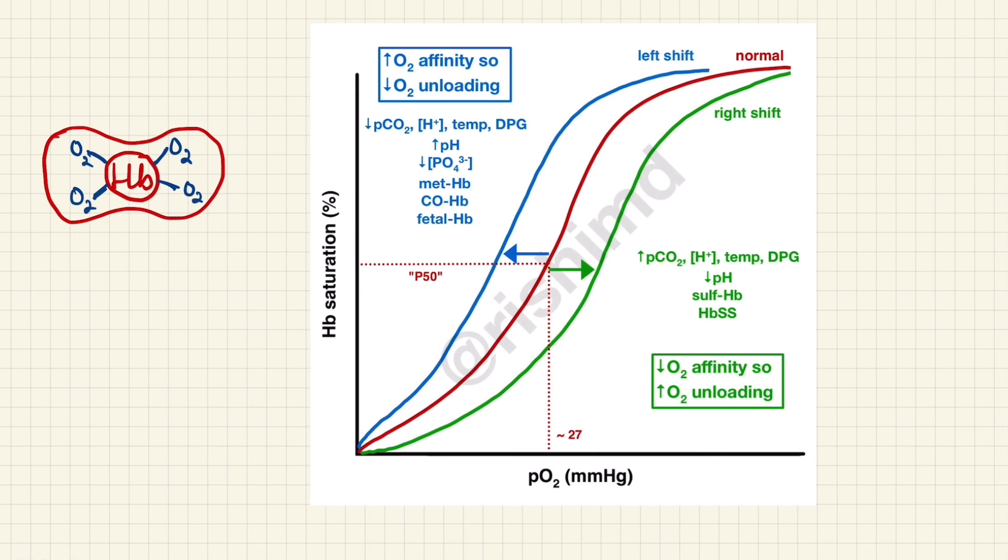If we talk about this line, the partial pressure is increasing, and the Hb saturation of oxygen is also increasing. The line comes out to be something like this, which is a sigmoid curve.